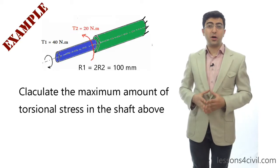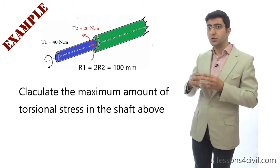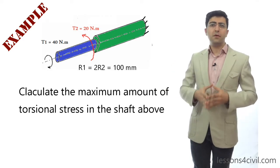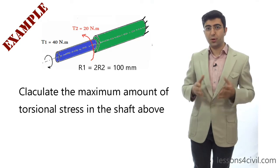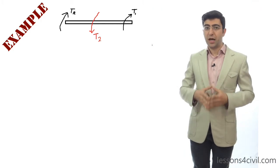Now, let's work on a practical example to see how it works. Here is the problem. We have a solid shaft which is under three different torques. We want to know what is the maximum amount of torsional stress. Okay, let's start. As usual, the first step is to draw the free body diagram of the shaft.